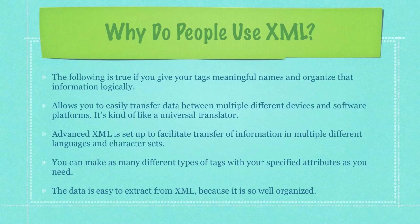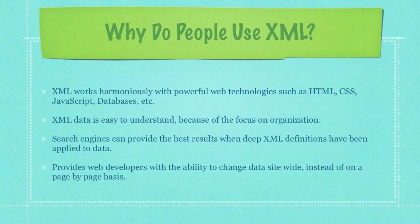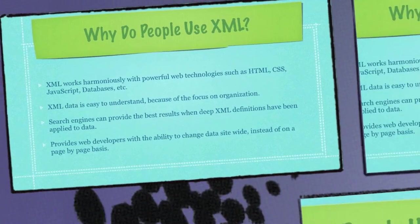The following is true if you give your tags meaningful names and organize that information logically. XML will allow you to easily transfer data between multiple different devices and software platforms — it's kind of like a universal translator. Advanced XML is set up to facilitate transfer of information in multiple different languages and character sets. You can make as many different types of tags with your specified attributes as you need. The data is easy to extract from XML because it's so well organized. XML works harmoniously with powerful web technologies such as HTML, cascading style sheets, JavaScript, databases, etc. XML data is easy to understand because of the focus on organization. Search engines can provide the best results when deep XML definitions have been applied to data. XML also provides web developers with the ability to change data site-wide instead of on a page-by-page basis.